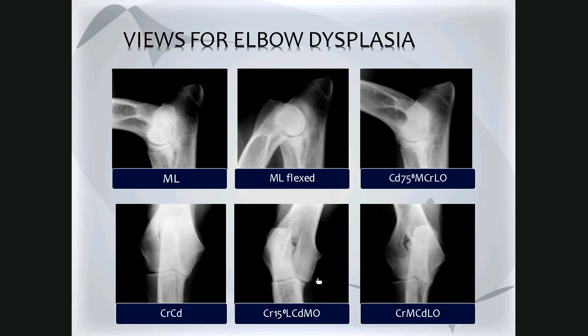The oblique view — the cranial 15 degrees lateral cordomedial oblique — is good to visualize the medial coronoid process as well as the medial humeral condyle. This is important because most of the pathology can occur here, for example OCD affecting the medial condyle of the humerus, and the medial coronoid process affected by fragmented medial coronoid process.